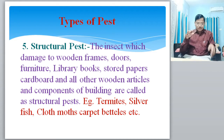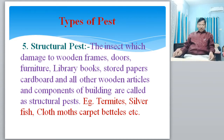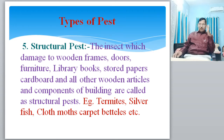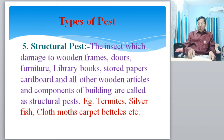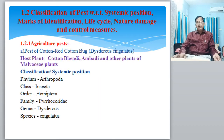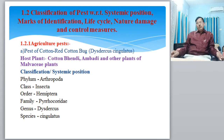In the second subunit, that is 1.2, we classify pests with respect to their systemic position, mark of identification, life cycle, nature of damage, and control measures. These are the five main points related to point number two.